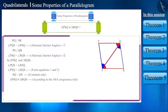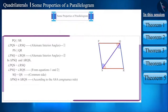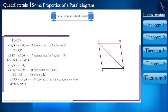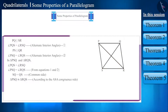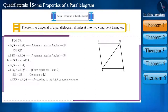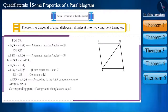Now we can say that diagonal QS divides parallelogram PQRS into two congruent triangles. You can also draw diagonal PR and check the congruence of the triangles — diagonal PR also divides quadrilateral PQRS into two congruent triangles. This is a property of a parallelogram and we can write it as a theorem: a diagonal of a parallelogram divides it into two congruent triangles.